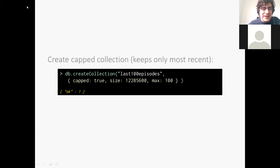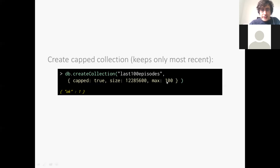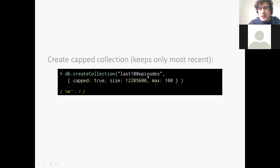One interesting thing about MongoDB is that we can create capped collections, which are useful for caching-type scenarios. We can cap a collection in terms of overall size in bytes, or in terms of the number of documents it contains. If the collection exceeds either limit, the oldest document is removed. This could be something like keeping the last 100 episodes queried — a sort of caching system.